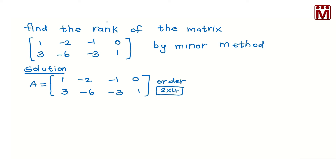Find the rank of the matrix [1, -2, -1, 0; 3, -6, -3, 1] by minor method.